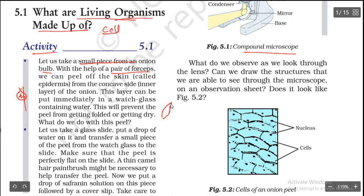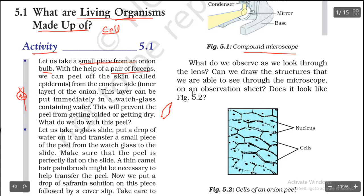Forceps are used instead of fingers because if you open the peel with your fingers, the cells may get damaged or paste off. We peel off the skin with the forceps. The first layer of the skin is called the epidermis. For every living organism, we call that first layer of skin the epidermis — 'dermis' means skin and 'epi' means outer.